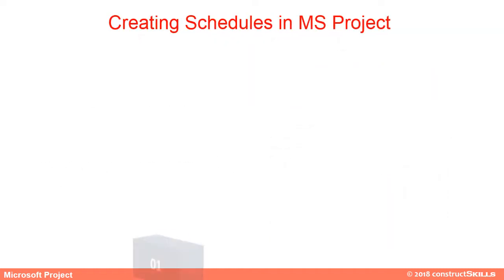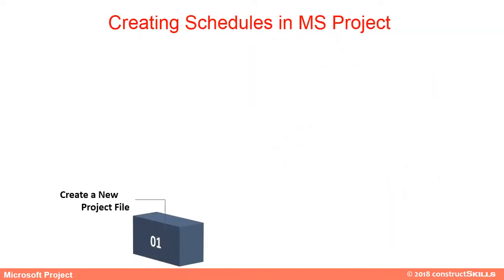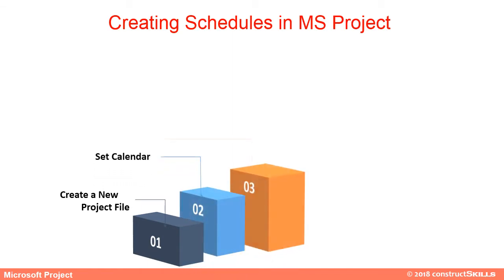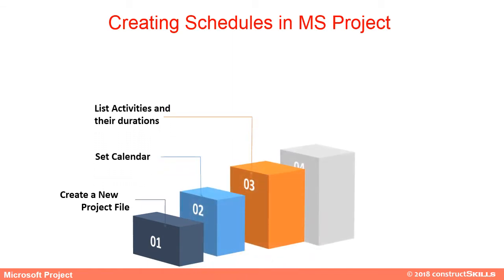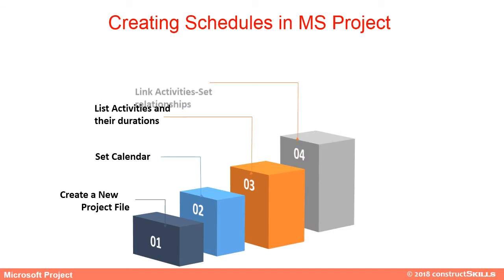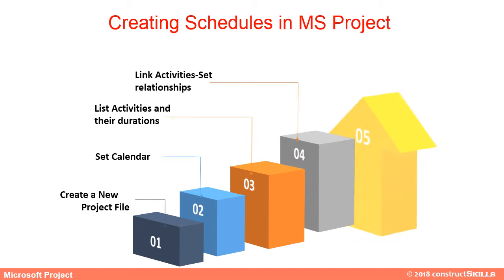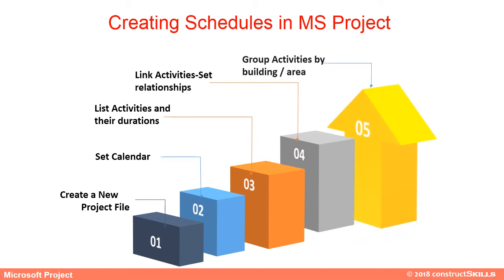The basic steps involved in creating a first schedule are: creating a new project file, setting the calendar, listing all the activities and their durations, linking activities, and grouping relationships as per assigned relationships.